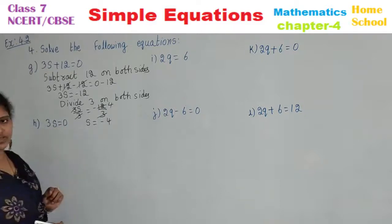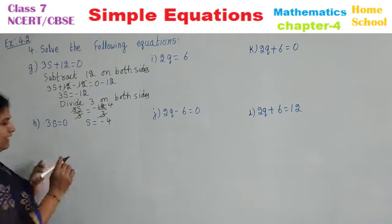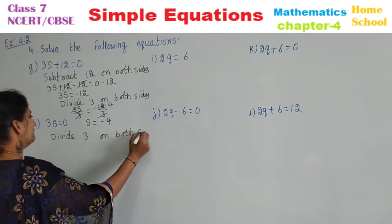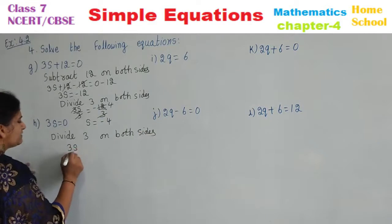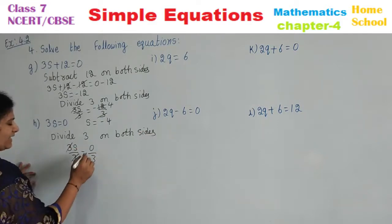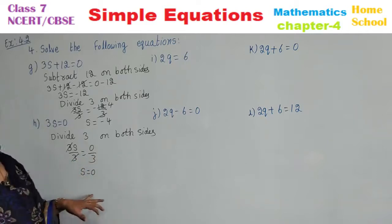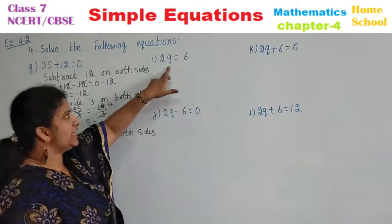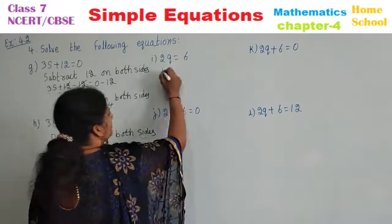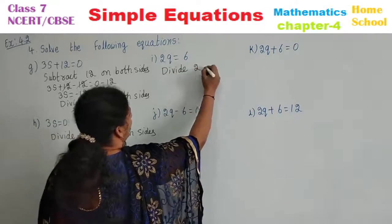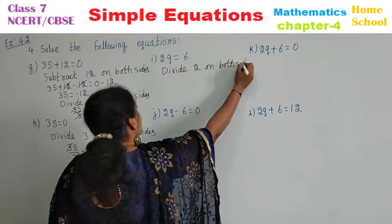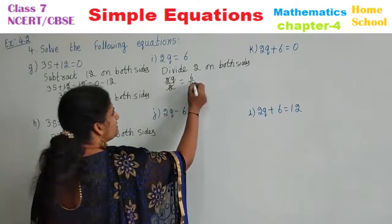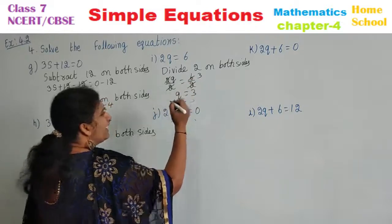Next sub-question: 3S is equal to 0. Other than variable, 3 is multiplied, so divide 3 on both sides. 3S by 3 is equal to 0 by 3. 3 and 3 cancel. 0 by 3 will be 0. Therefore S is equal to 0. Next, I sub-question: 2Q is equal to 6. For variable, 2 is multiplied — divide 2 on both sides. 2Q by 2 is equal to 6 by 2. 2 and 2 cancel, 2 threes are 6. Therefore Q is equal to 3.